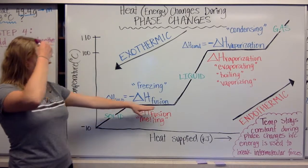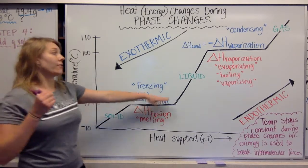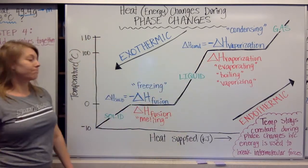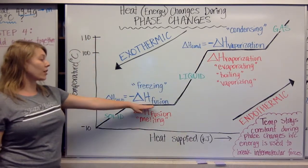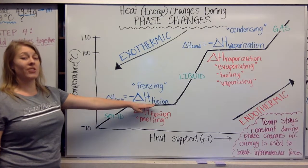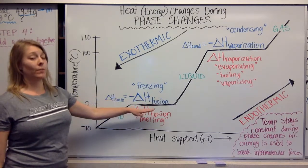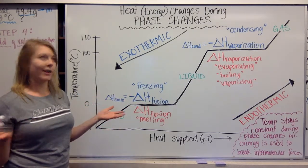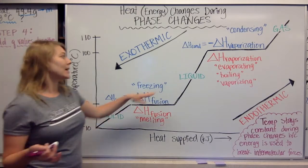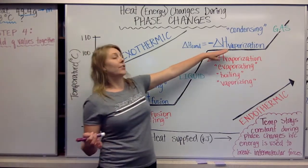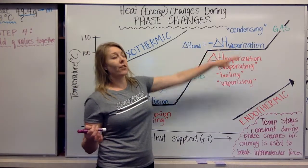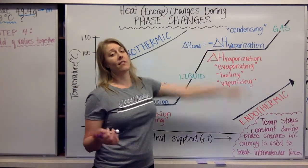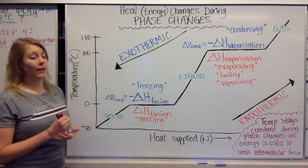What we actually have on the flat lines is a combination. Here we have a combination of a solid and a liquid mixture — so ice water. At 100 degrees Celsius we actually have a combination of liquid and gas, so water and steam.